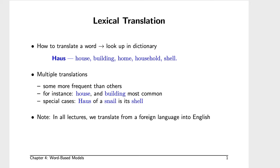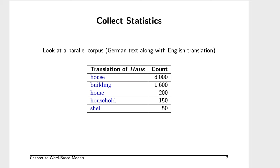In this lecture, we are going to be using German as our foreign language and will be translating into English. I want to thank Philip Koehn of Johns Hopkins University for the gracious use of these slides. Philip is the author of the Statistical Machine Translation Textbook, and more recently, the Neural Machine Translation Textbook. These slides can be found in extended form at statmt.org/book.